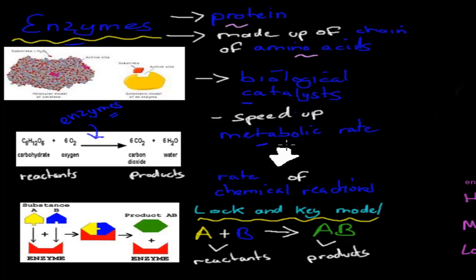Enzymes make sure chemical reactions occur a lot faster than they would usually. One example is cellular respiration, where carbohydrates such as glucose and oxygen come together to form carbon dioxide, water, and energy. This reaction wouldn't occur fast enough without enzymes. We need enzymes to make sure this chemical reaction occurs at a fast enough rate to produce enough energy for us to survive. Without enzymes it would still go ahead, but not fast enough.